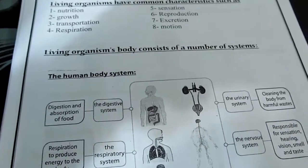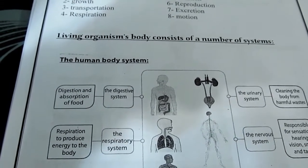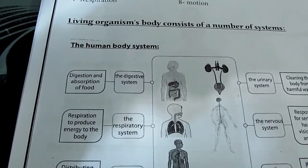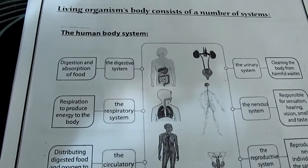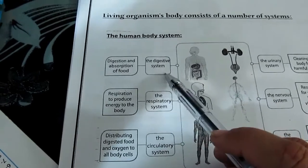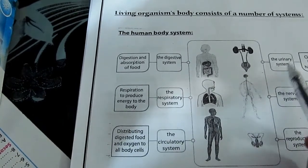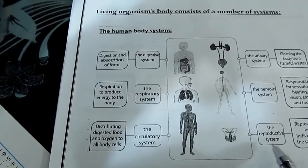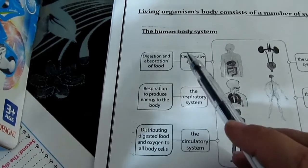Living organisms' bodies consist of a number of systems. Each system consists of a group of organs. Let's take some examples of our body systems: the digestive system, respiratory system, circulatory system, urinary system, nervous system, and reproductive system.